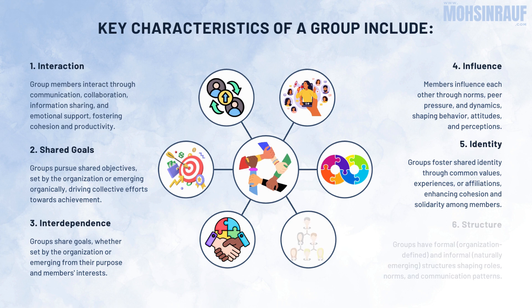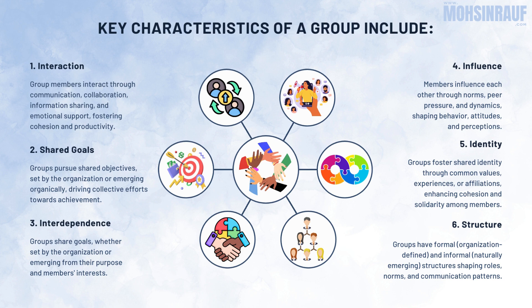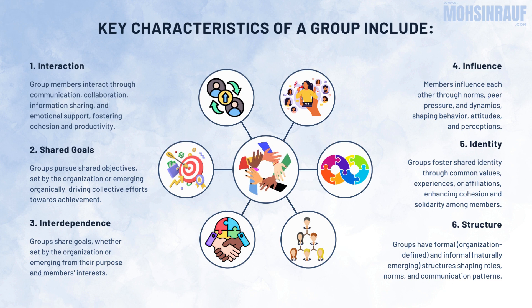6. Structure. Groups may have formal or informal structures that dictate roles, norms, and communication patterns among members. Formal groups are officially designated by the organization and have specific roles and responsibilities, while informal groups emerge naturally based on social interactions and shared interests.